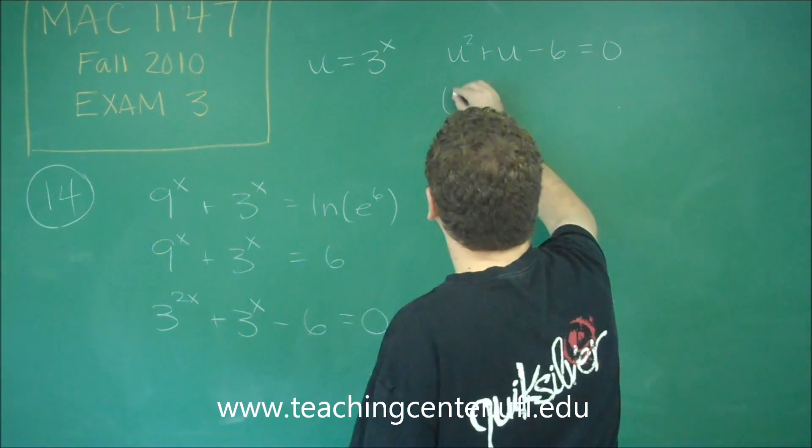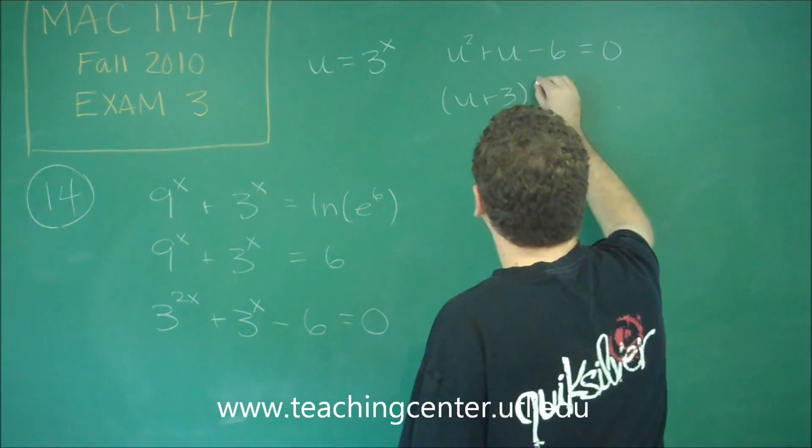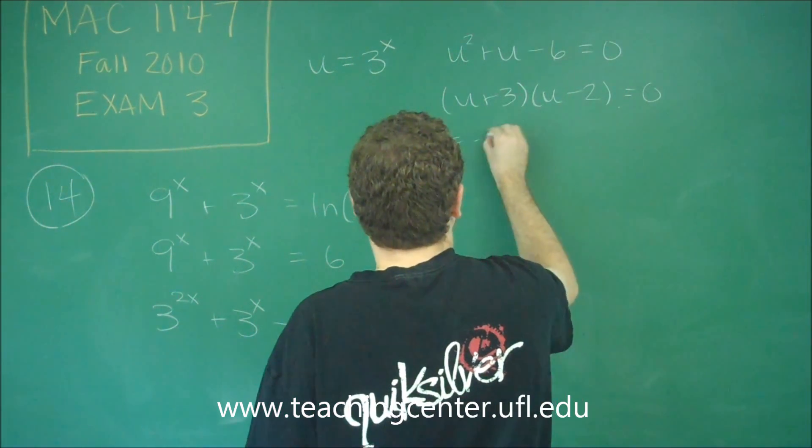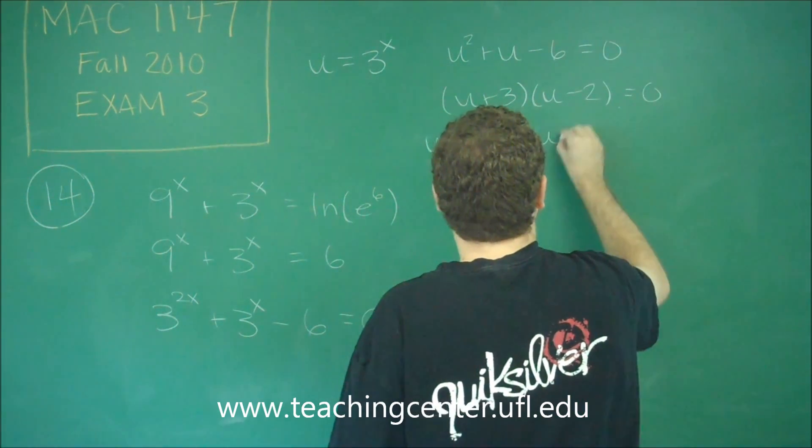So this is going to give us (u + 3)(u - 2). So we get u = -3, u = 2.